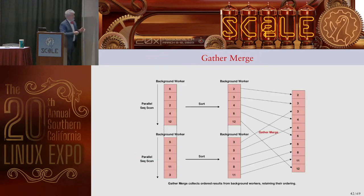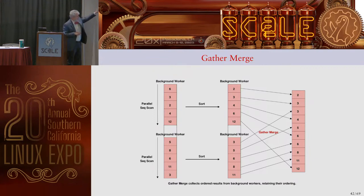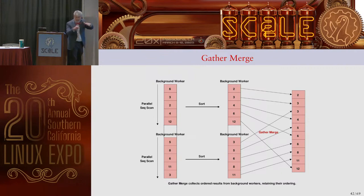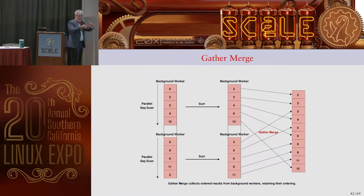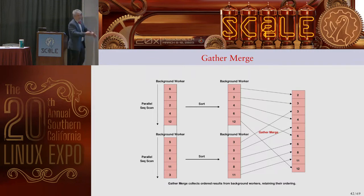In gather merge, we do a parallel sequential scan on each background worker, sort the first batch in one worker and the second batch in the other worker, and then perform the same merge append process — taking the least value from the first worker, then the least value from the second, zippering them in to give us a globally sorted result. That's what parallel gather merge is.